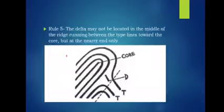Rule 5: the delta may not be located in the middle of the ridge running between the type lines toward the core, but at the nearer end only. In this figure, we have the type lines, the core, and a short ridge. The delta is located at the nearer end towards the type lines and near the point of divergence.